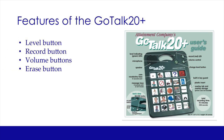Some of the features of the GoTalk 20 Plus include recording and storing words and phrases. There are five levels, and each level includes 20 words or phrases. The device also includes five core vocabulary keys. The core vocabulary messages will stay the same on each level until you record over them. Other features of this device include the level button, the record button, the volume buttons to turn the volume up or down, and an erase button.